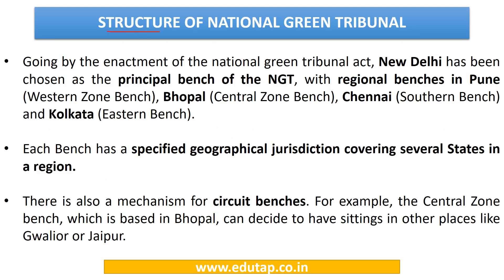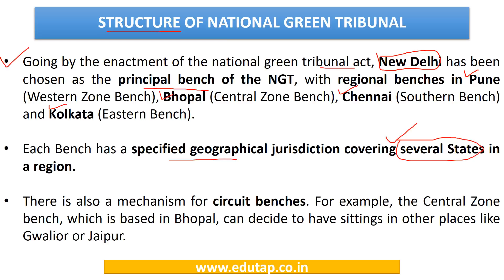What is the structure of NGT? According to the National Green Tribunal Act 2010, New Delhi is chosen as the principal bench of NGT, with 4 other regional benches: Pune (Western Zone Bench), Bhopal (Central Zone Bench), Chennai (Southern Zone Bench), and Kolkata (Eastern Zone Bench). Each bench has a specified geographical jurisdiction covering several states in a region. Each bench has jurisdiction not only over the state it is situated in but over other states as well.